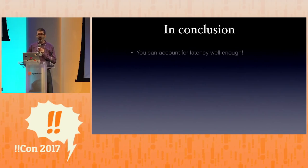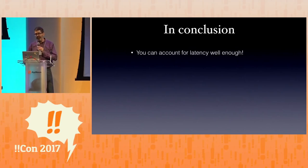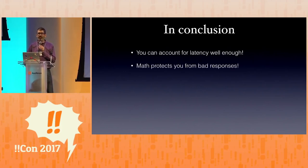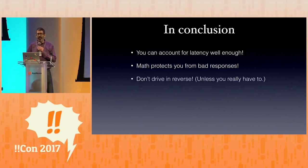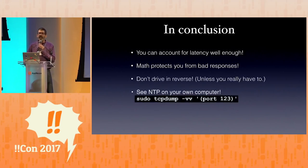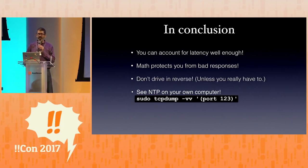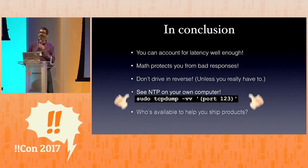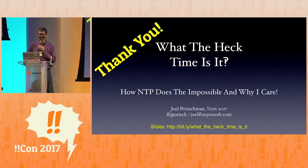In conclusion: you can account for latency well enough — not perfectly, but well enough, and that is sufficient. Math protects you from bad responses — if you are on guard against terrible things being told to you on the internet, also a good rule in general, you can protect yourself. Don't drive in reverse unless you really have to. And you can see NTP on your own computer — thanks to Julia Evans and her zine showing cool tools. You can run sudo tcpdump -vv port 123 and watch your computer every 64 seconds make these tiny little adjustments. Thank you very much.